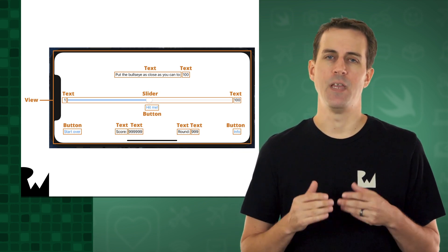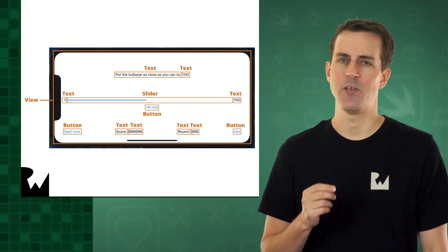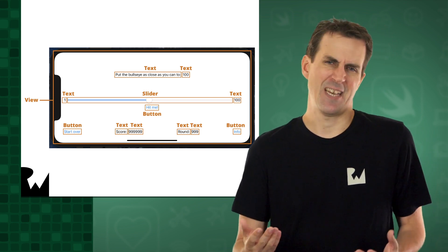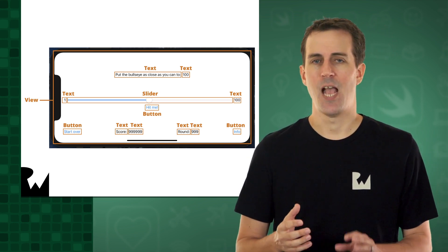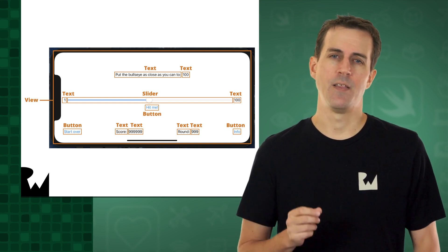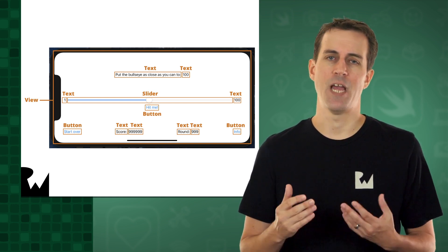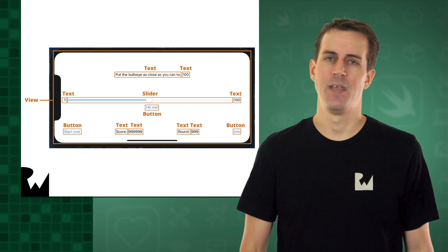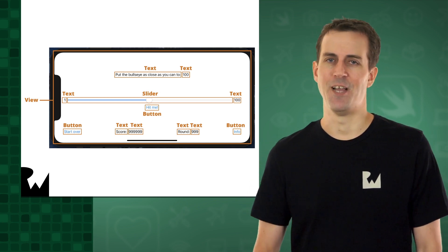I do want to point out that in most apps, you wouldn't make the user enter a precise value like this using a slider, because that can be kind of frustrating. However, for a game like Bullseye, the slider actually makes the game more challenging, which is a good thing. After all, we don't want to make it too easy for the player.